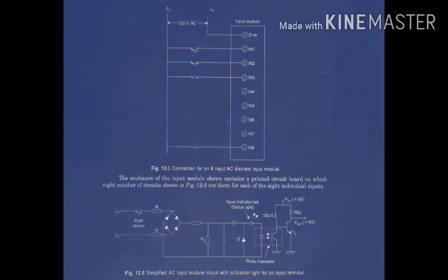Here is 220V AC. For 24V DC, positive and negative are used. For example, in our case we are using push button, limit switch, proximity switch — all at 220V AC. This is the connection diagram. Now what is this circuit diagram? This is figure 12.6: simplified AC input module circuit with indication light for one input terminal. L1 and L2 are the supply lines. The working is the same for DC, only the supply changes.